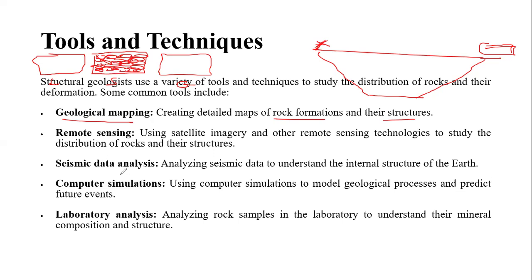If you are on the surface and you see that the seismic velocity traveled very fast, you can assume the rocks below are rigid, stiff, and not fractured — meaning that area is suitable for building houses, malls, and other structures. Computer simulations use software to model geological processes and predict future events.